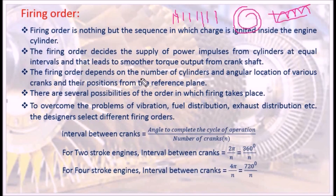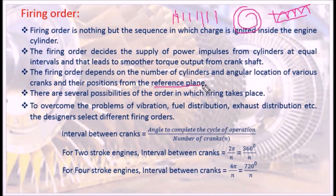The firing order depends on the number of cylinders and the angular location of various cranks and their positions from the reference plane. To find out the firing order, we consider how many cylinders there are, what the crank interval is, and what the crank positions are from the reference plane. These are the factors that decide the firing order.